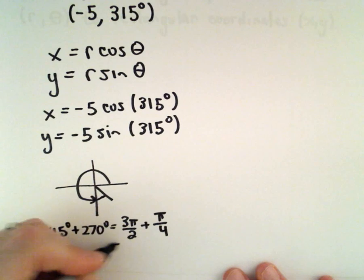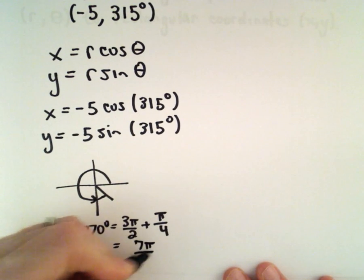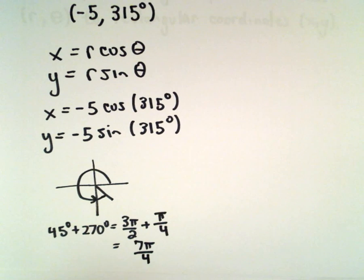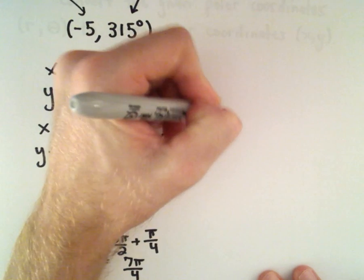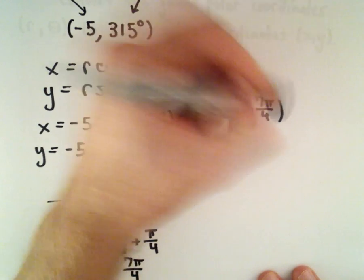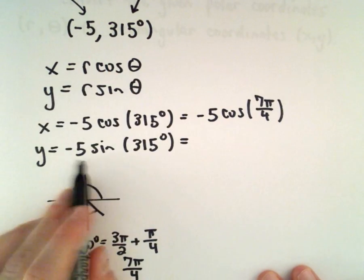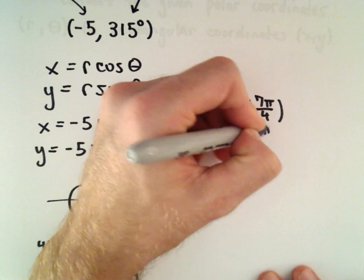And if we get common denominators, we would have 6 pi over 4 plus pi over 4. So 7 pi over 4 will be our angle in radians. So equivalently, we can write this as negative 5 times cosine of 7 pi over 4. And we can write the y value as negative 5 times sine of 7 pi over 4.